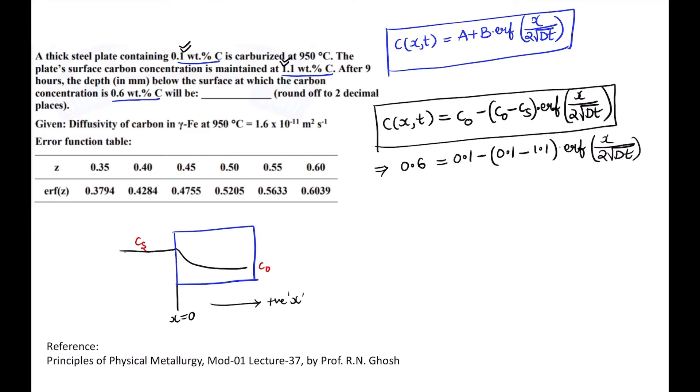So now I have put in the values. So now it is just simple math. 0.6 minus 0.1 will be equal to minus of that will be becoming 1.0, so this will be plus 1.0 into erf(x/(2√Dt)). So I am getting minus 1 over here and there is a minus on the outside, so that is plus 1. So this will be becoming 0.5 is equal to the error function.